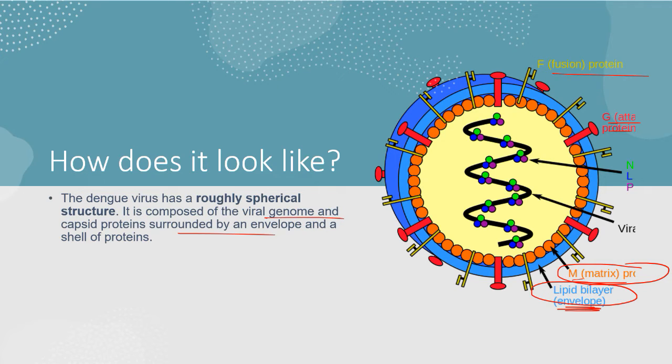There is also fusion protein or F-protein. There are two types of surface proteins visible: one is the G-attachment proteins, another one is the F-fusion proteins.